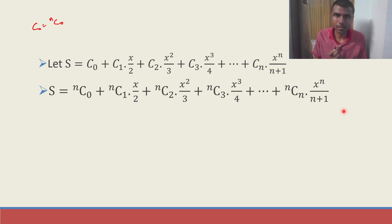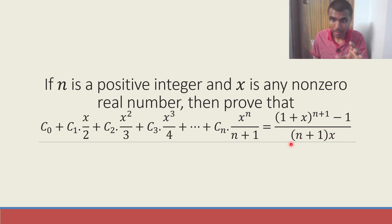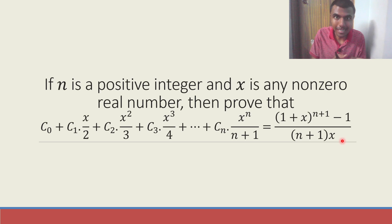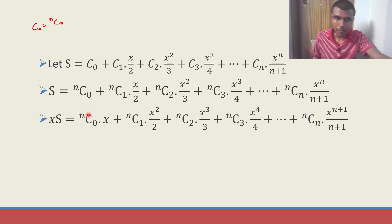Now next, observe what they are asking us to prove. In the RHS denominator there is (n+1) into x. So first what I am going to do is multiply the LHS first with x, then with (n+1).